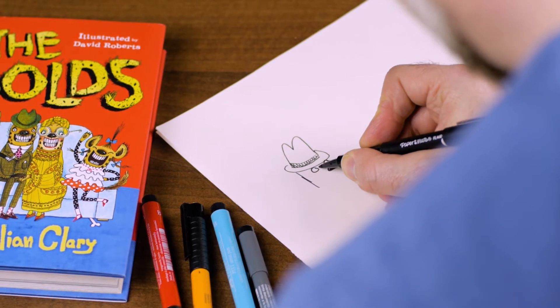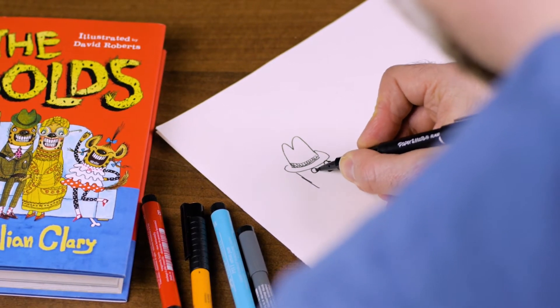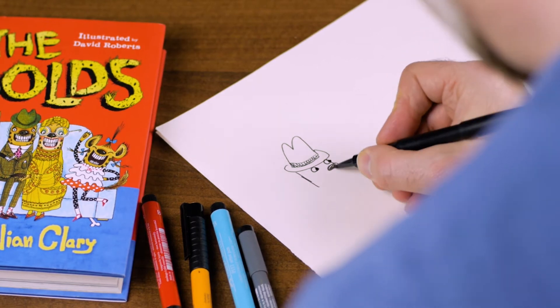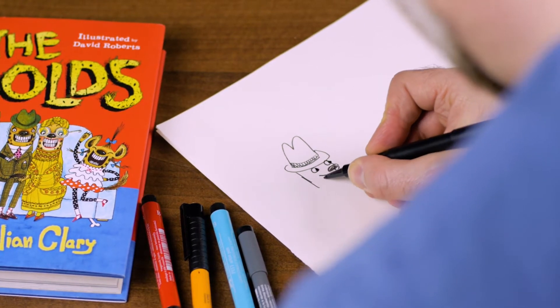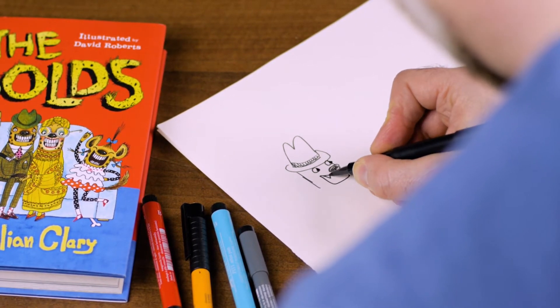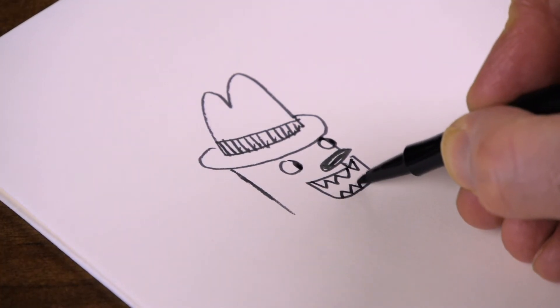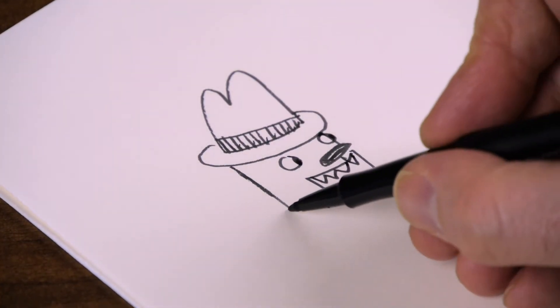And then his eyes come in here like this. And we're going to have him looking over to this side. He's got a lovely big hyena-y mouth like this with sharp, sharp hyena-y teeth.